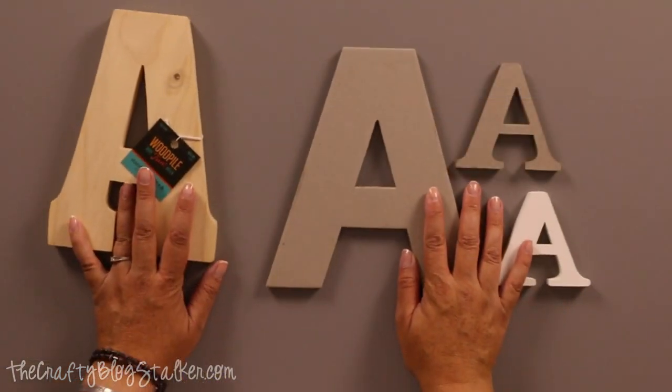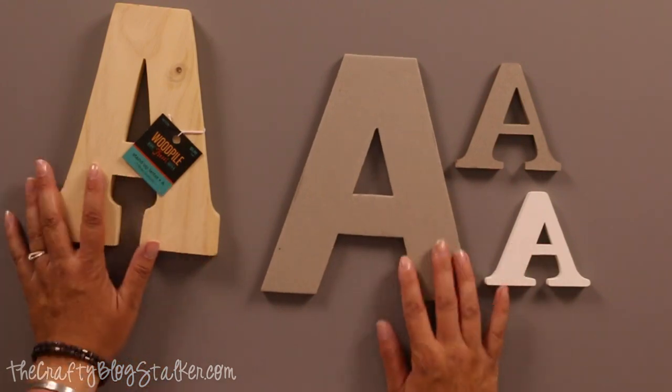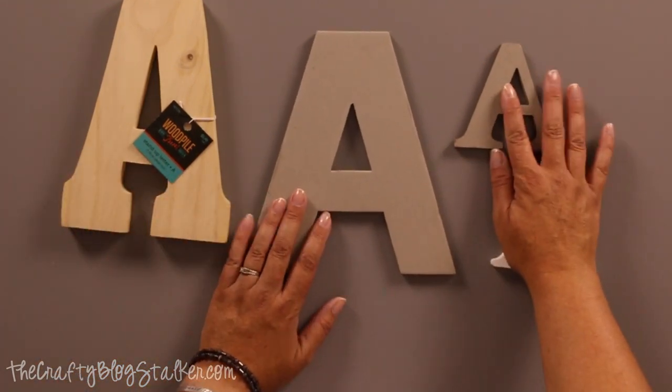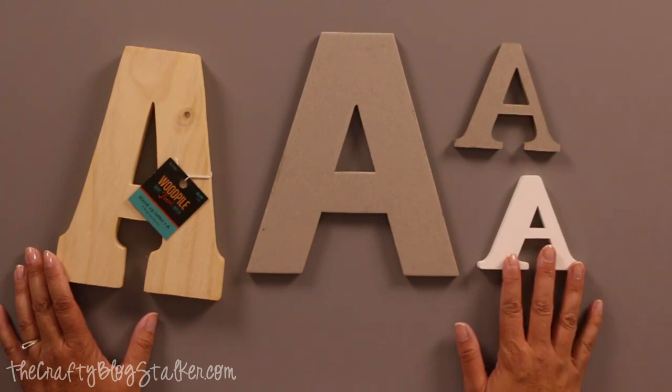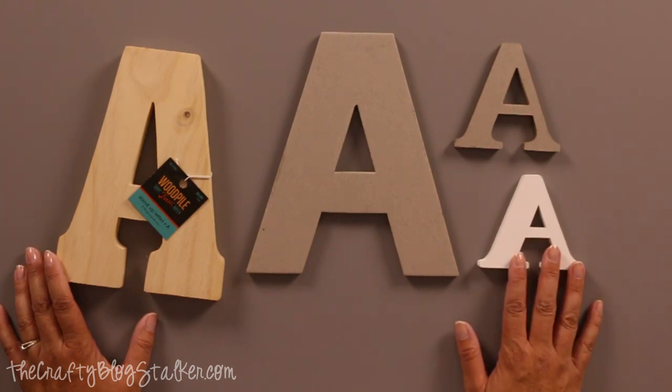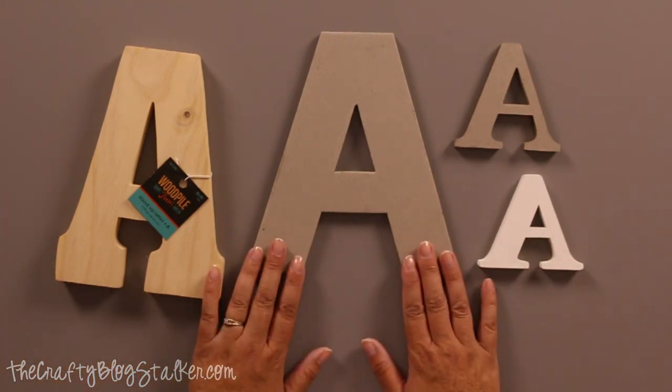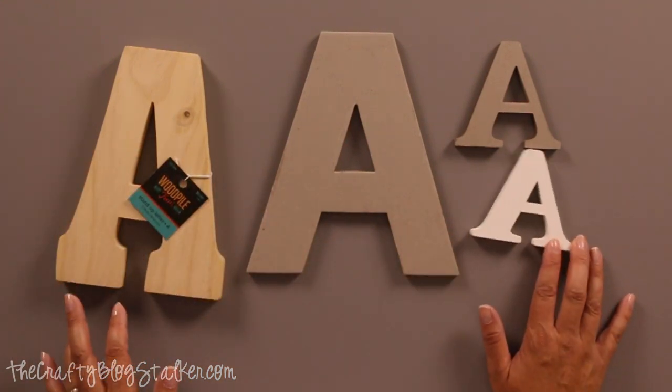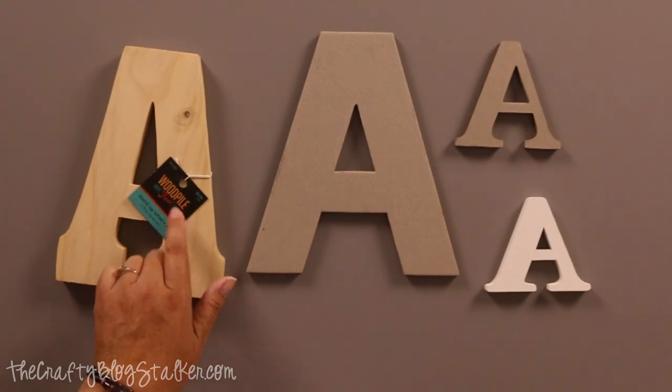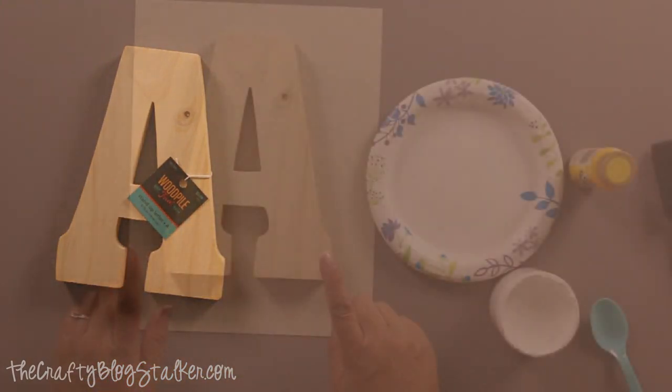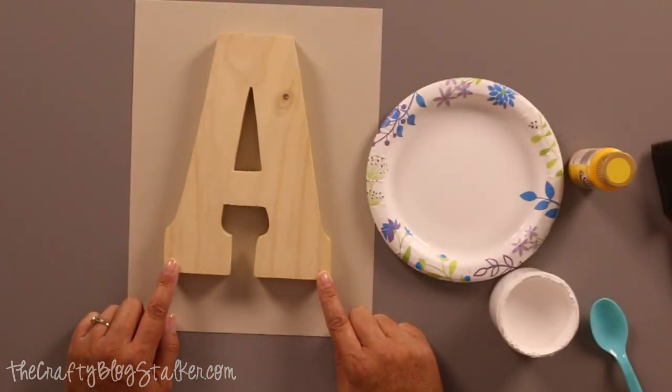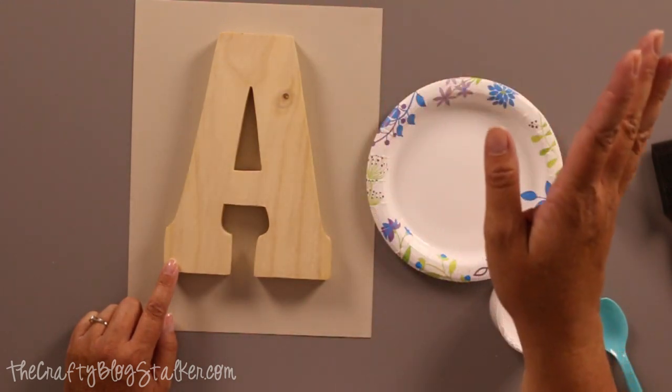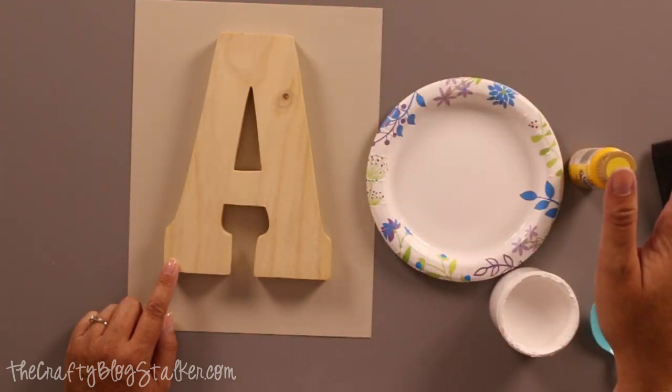I've got four different techniques to show you. These are the letters that I'm going to be painting and decorating and adding to my wall in my kitchen. We're going to do each letter a different way, starting with this A. I want to do an ombre effect. The main colors of my upstairs living area are yellow, blue, and gray.